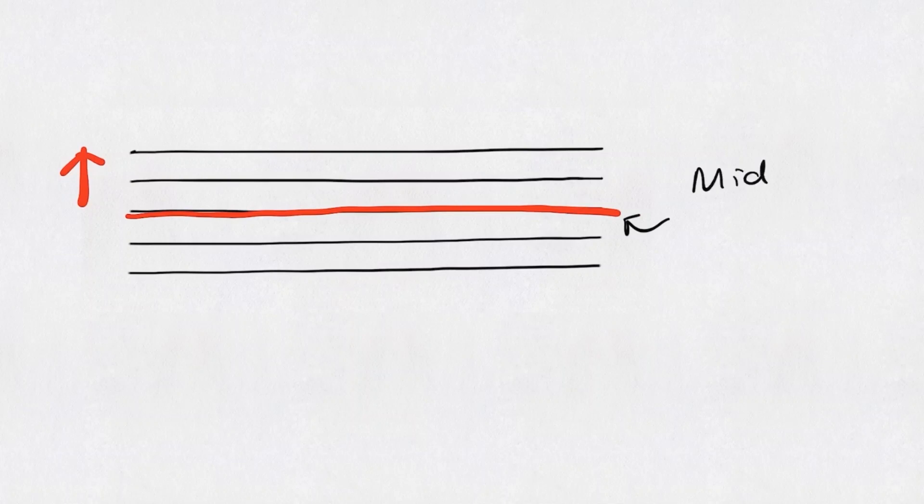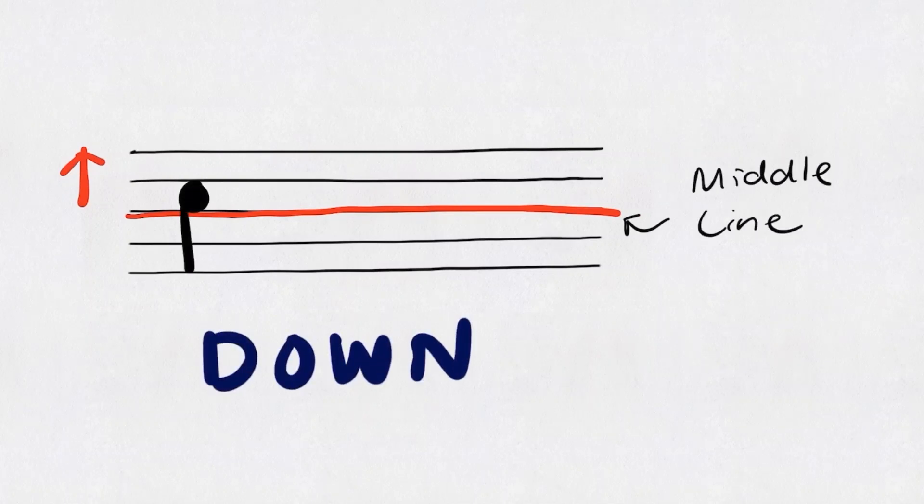Rule number two. If the note is above the middle line, the stem will go down like this.